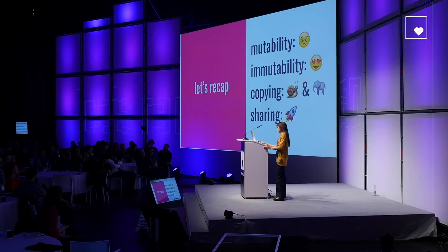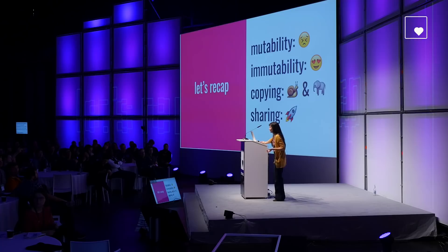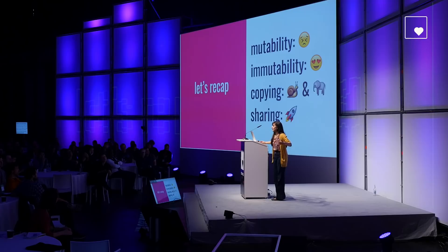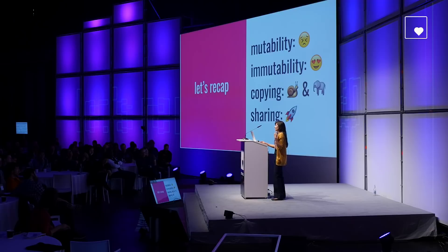To recap: mutability induces headaches and is to be avoided, especially in functional programming where the essential idea is to have no side effects and only use pure functions. Immutability is great — I can't mess up my coworker's program by putting an alien in a zoo they thought was all Earth animals. But copying is a bad way to handle immutable data because it's inefficient in both time and space. Structural sharing using tree and trie structures, reusing as much information as possible from one version to the next, is a really performant solution.